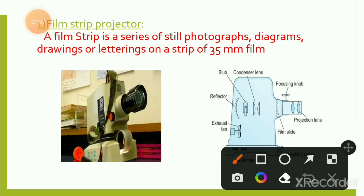Film strip projector: a film strip is a series of still photographs, diagrams, drawings, or lettering on a strip of 35 mm film. In exams, it is often asked that the size of film strip is 35 mm.